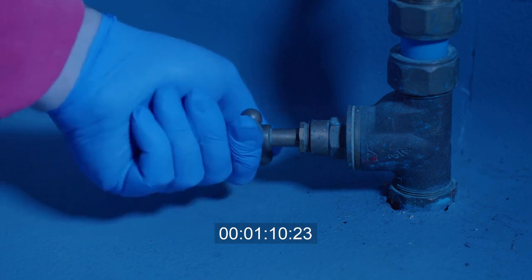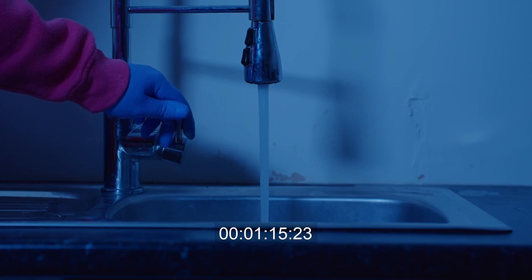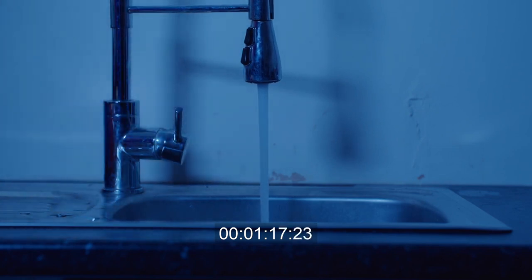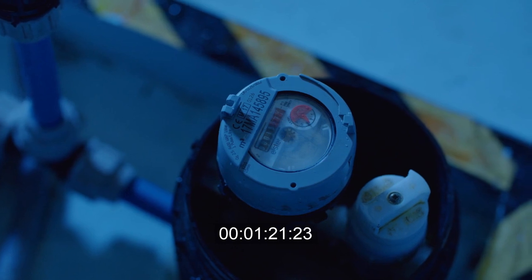Open the internal stop tap and turn the water supply back on. Flush water through the system from a tap for two minutes. And finally, check the water meter for any continuing water loss.